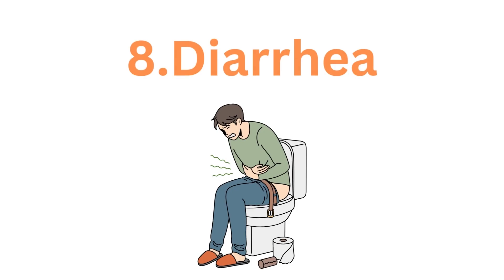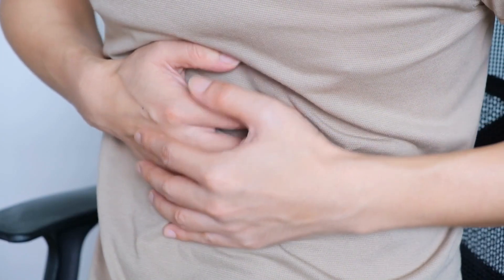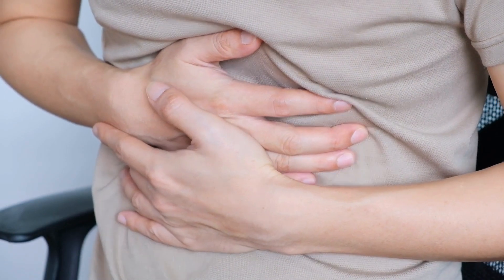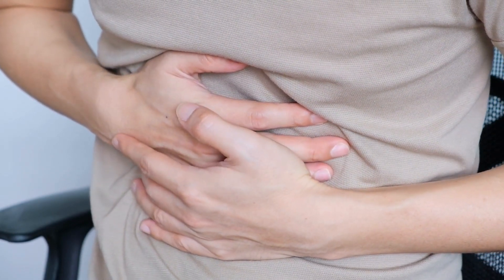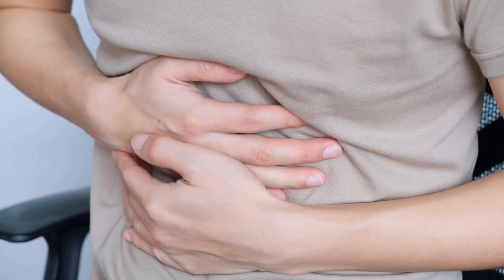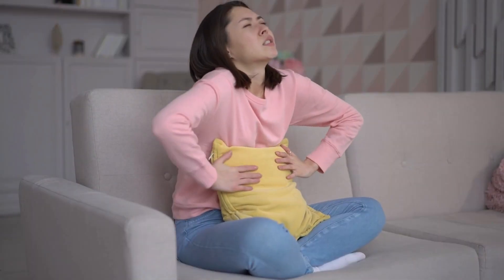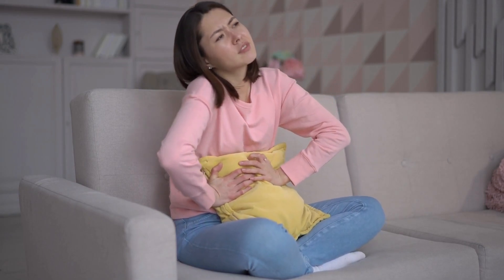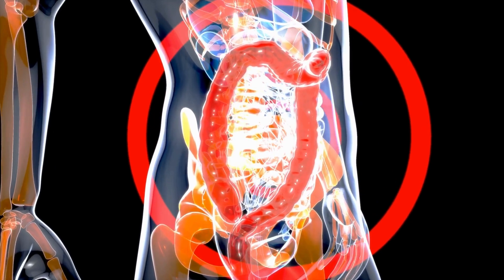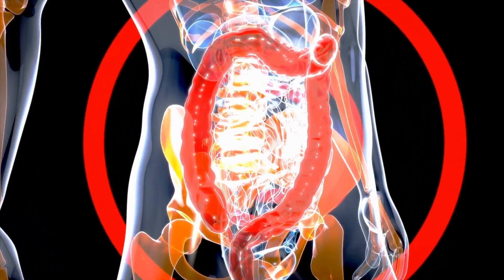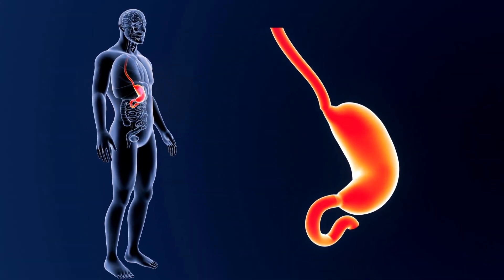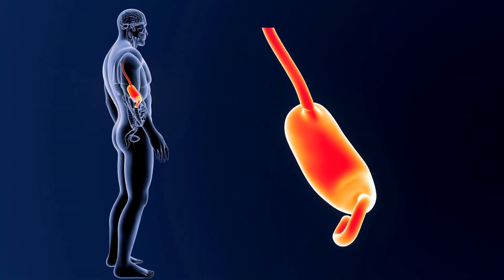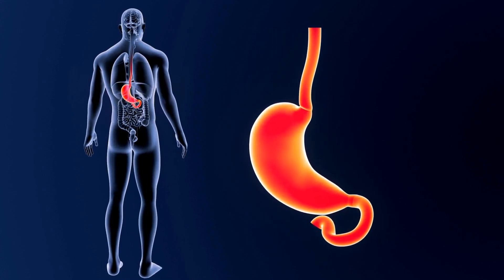Number eight: diarrhea. Diabetics are at increased risk for a variety of digestive complications, including diarrhea. Most people with diabetes will experience diarrhea at some point, and long-term diabetics are more likely to have this complication. People with diabetes who have diarrhea can also have problems with bowel control, especially at night, because the anal sphincter is affected by the nerve damage associated with diabetes.